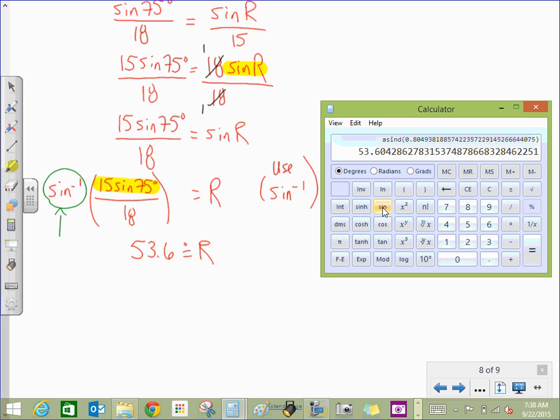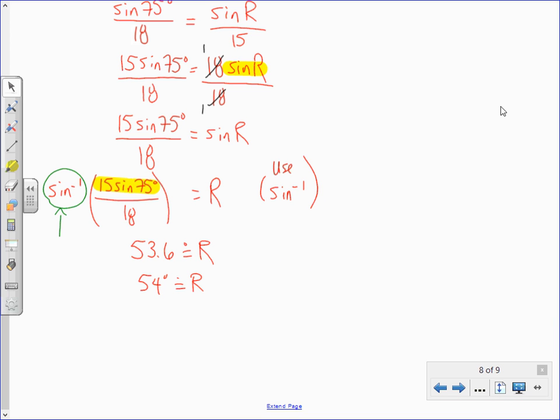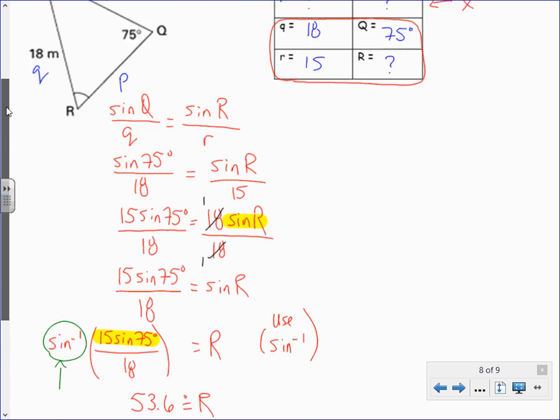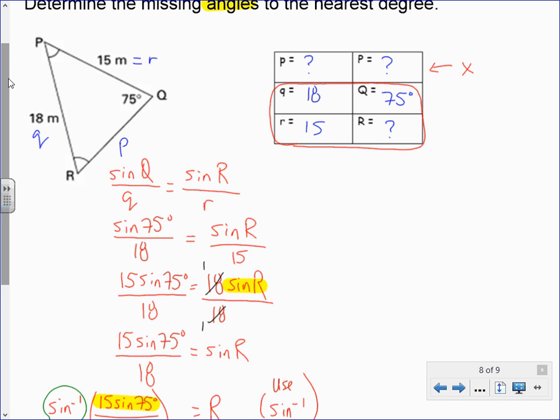Which, if we needed to round that up, about 54. Okay. So let's have a look here. Let's look back at the diagram. So angle R is 54. I'm just going to put that in here. I'll put that over here. So I think we'll close the video here.